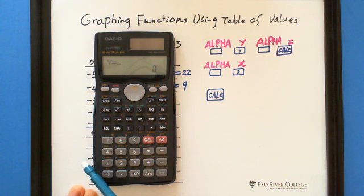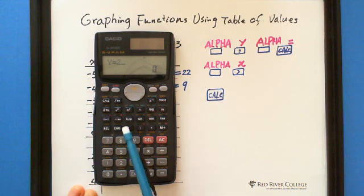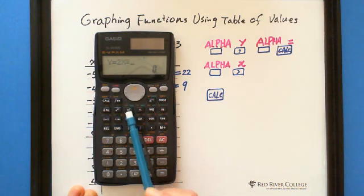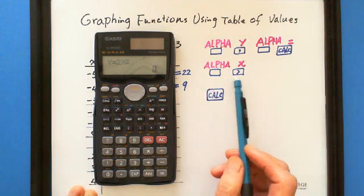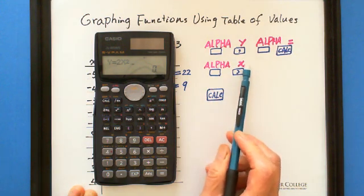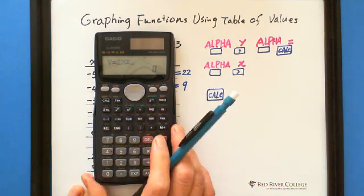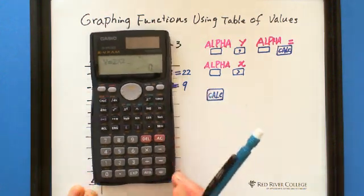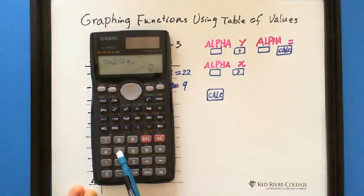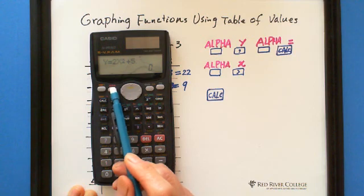Then we enter the function 2x squared, which is alpha, comma button x squared,